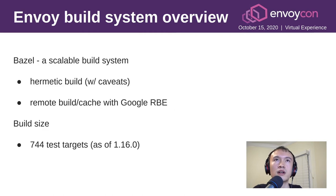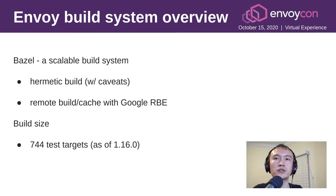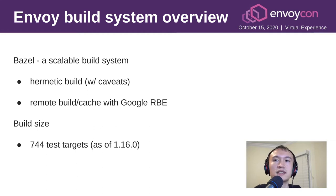Let's go over the Envoy build system. Envoy uses Bazel as a build tool, which provides the benefit of hermetic build and remote build cache. We use remote build execution from Google. For ARM, we also use cache from an open source project called Bazel Remote with an S3 backend. The build is really large today — just for the binary test targets, we have 744 tests, and each test target has 10 to 100 test cases, so this is very time consuming to run on small machines.